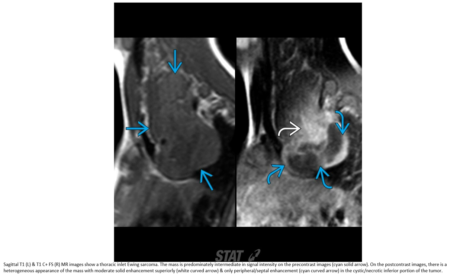This is the MRI image of the same patient. The thoracic inlet involvement is common. The mass is predominantly intermediate in signal intensity on the pre-contrast image. On the post-contrast image, there is a heterogeneous appearance of the mass, with solid enhancement superiorly and only peripheral enhancement in the cystic-necrotic interior portion of the tumor.